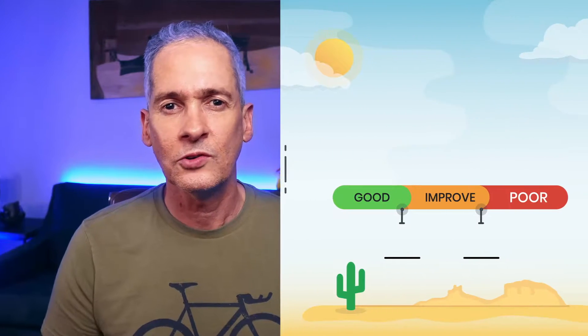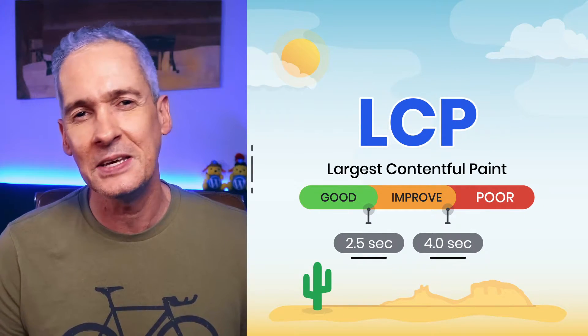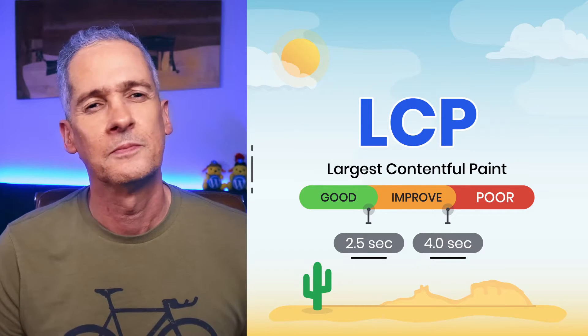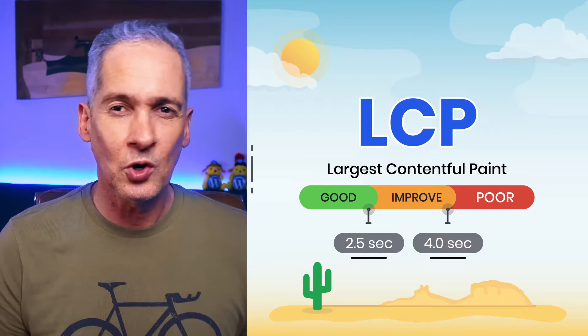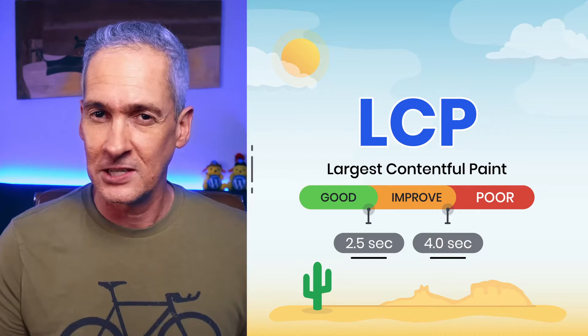Now, let's see how AMP helps us directly to achieve the desired Core Web Vital threshold so that we can ensure great page experiences to our users. The first Core Web Vital we discussed was LCP, which captures the render time of the largest image or text block visible within the viewport of the user. And we know that to provide a good experience, the LCP should occur within 2.5 seconds from the time when the page starts loading.